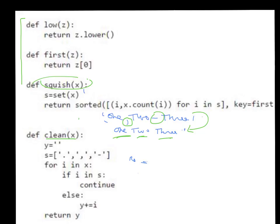Here's how clean works: the original string x comes in — say 'one, two, three.' We create an empty string y. We go through x character by character. If a character is not one of the characters we want to get rid of — not a period, not a comma, not a dash — we concatenate it onto y. If it is one of those characters, we simply skip it and read the next character. The set s defines the characters to get rid of. For each character i in x, if i is in s, continue; otherwise concatenate it onto y. Then return y — so it cleans up the original string.